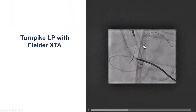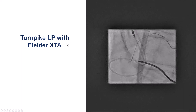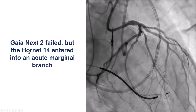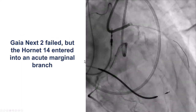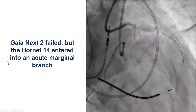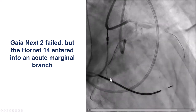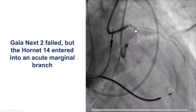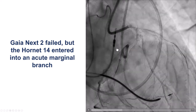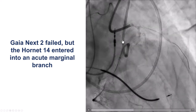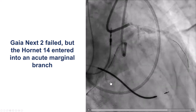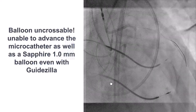Here is antegrade wire escalation: Turnpike LP, Flair XTA — did not make much progress. We then escalated to a stiffer guide wire; this is a Hornet 14 that went into an acute marginal branch. This emphasizes the importance of having an RAO view and orthogonal views to make sure we understand the course of the guide wire and the vessel.